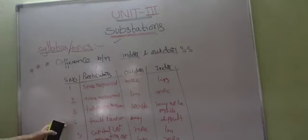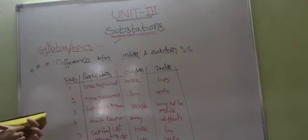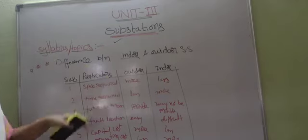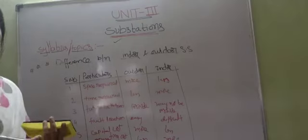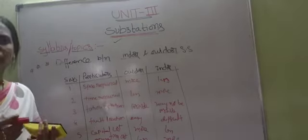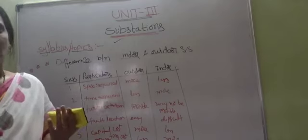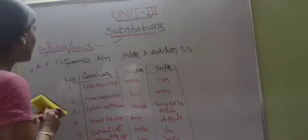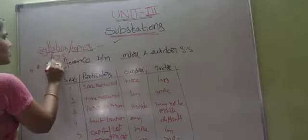These are the basic differences between outdoor and indoor substations — both being types of air insulated substations. According to service point of view and construction point of view, all the classifications we have studied are under air insulated substations.